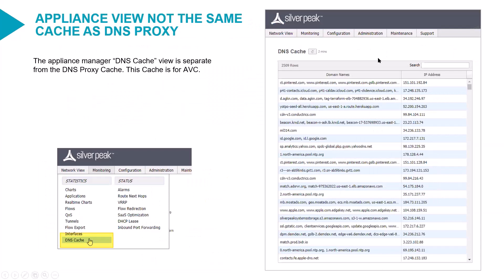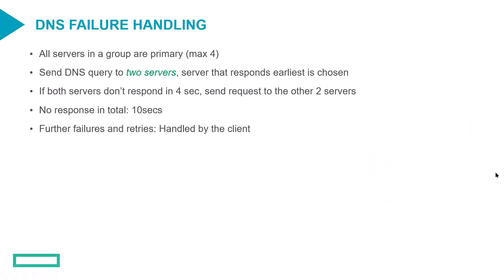This DNS cache feature shown in the local appliance UI is not the same as the proxy cache — it has more to do with what we do at the ABC level with regard to extracting domain names and intercepting DNS. You can have a max of four DNS servers. We send DNS queries to two of those servers simultaneously — I'm not sure how it picks the two, maybe it's random. If both servers don't respond in four seconds, requests are sent to two other servers. If there's no response in ten seconds, the client has to handle the failure — whatever the client would do when all DNS fails is what will occur.